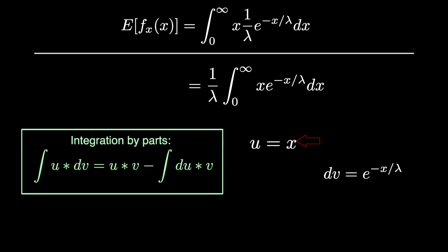Now doing simple derivatives, we can find du as the derivative of x and v as the integral of e to the negative x over lambda.